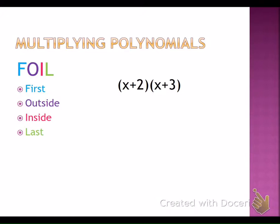If one's a binomial and the other one is a trinomial, or one's a binomial and the other is a polynomial, this method won't work. You have to be multiplying two binomials in order for FOIL to work. You can see the problem off to the side: x plus 2 times x plus 3. X plus 2 has two terms and x plus 3 has two terms.